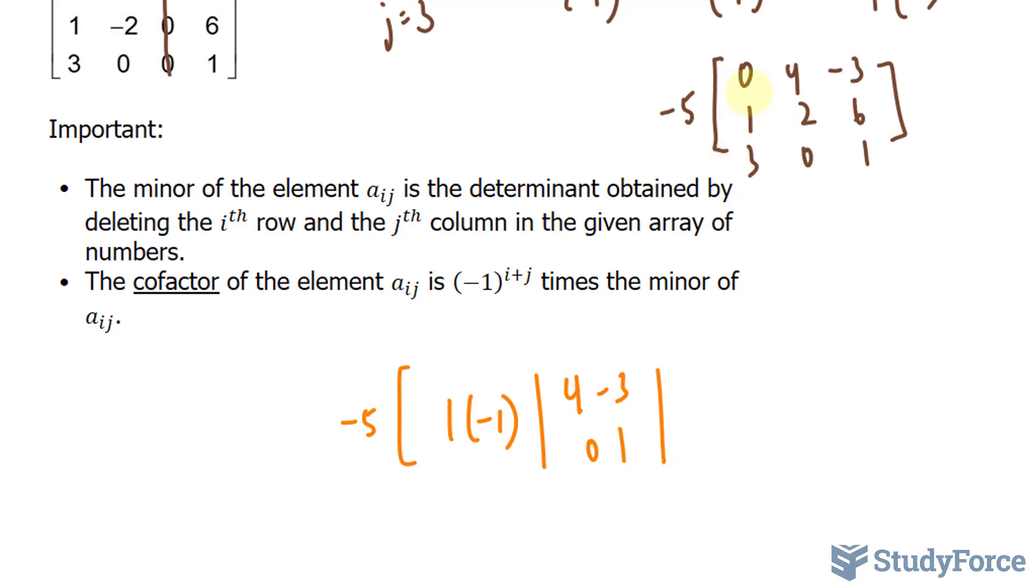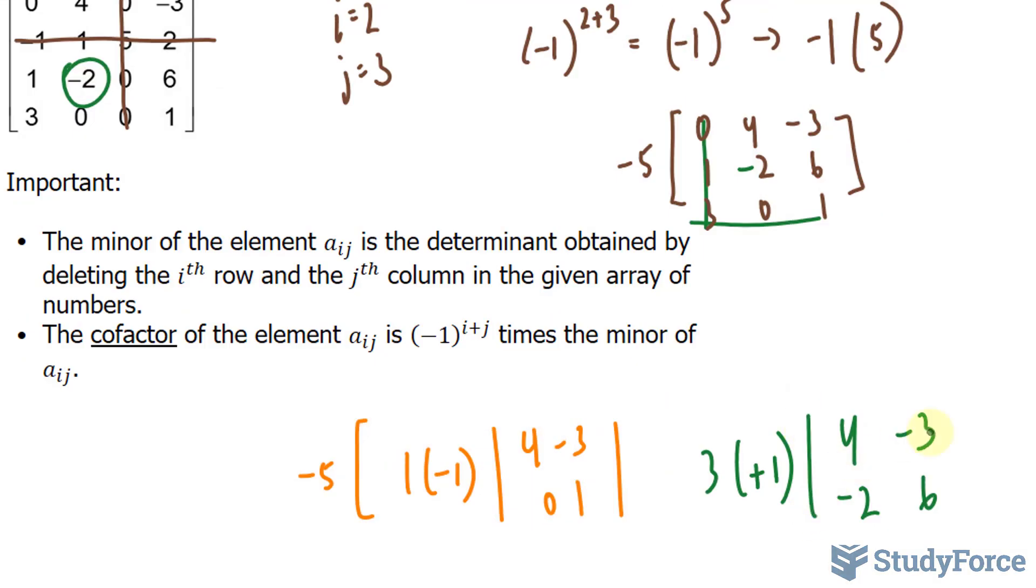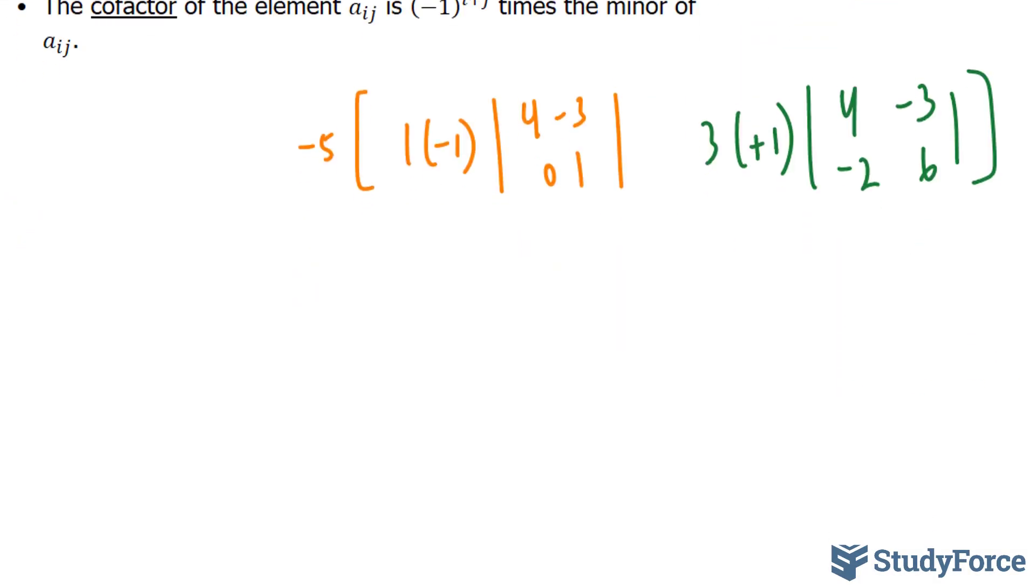Now on to the last number, 3. 3 is positive, the row is positive. So I'll put down plus. And this is being multiplied to the square matrix that remains, and that's shown here.